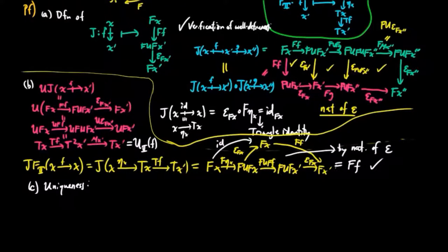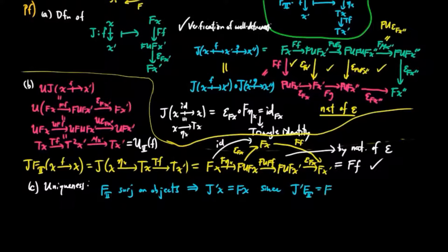Finally, we prove uniqueness. Note that the free functor on the Kleisli category is the identity on objects, hence surjective on objects. Thus, given another functor J', we have J'X equal to FX. Then since J' composed with F_T equals F by definition of a T-inducing adjoint situation morphism, J' on a morphism F equals J' FF followed by ε FX' followed by F η_X, which is pre-composition by the identity by the triangle identity of the adjoint situation.